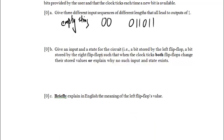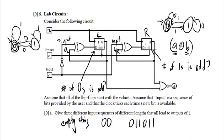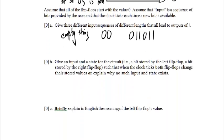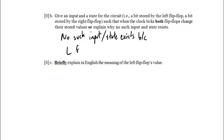Next part: give an input and a state (left flip-flop bit, right flip-flop bit) such that when the clock ticks, both flip-flops change their stored values — or explain why no such input and state exists. Looking at the circuits: the right D flip-flop changes its stored value exactly on an input of one. The left D flip-flop changes its stored value exactly on an input of zero. So no such input-state exists, because both flip-flops cannot change simultaneously on any single input.